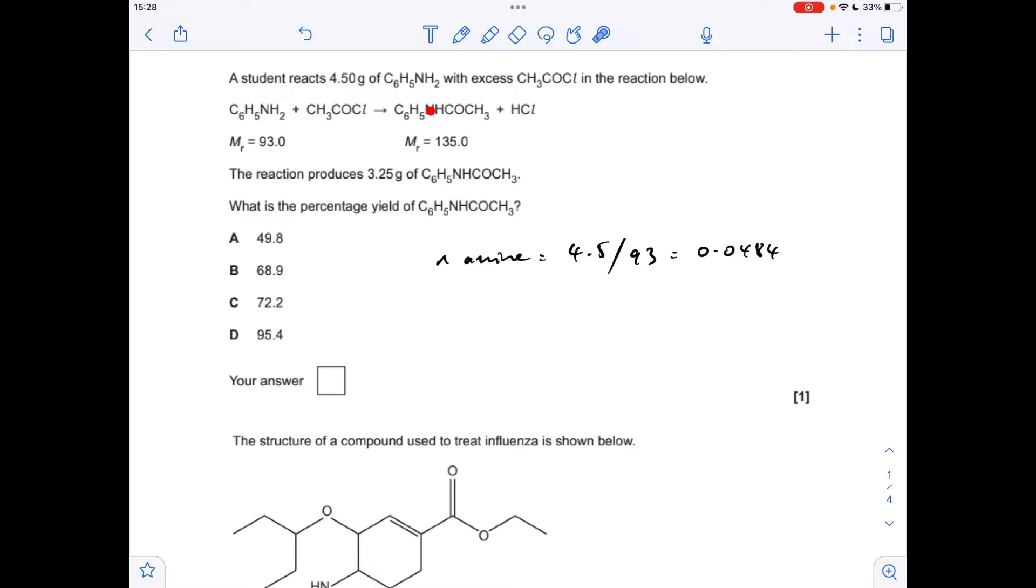The mole ratio is 1 to 1, so we'd expect to make the same number of moles of the amide, this stuff here. So next thing we need to do is work out how many moles we actually made of the amide. So it's the mass over its MR.